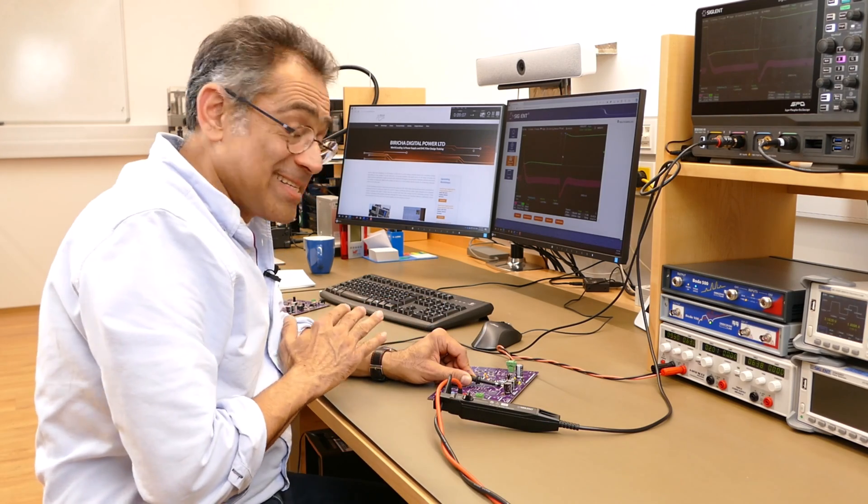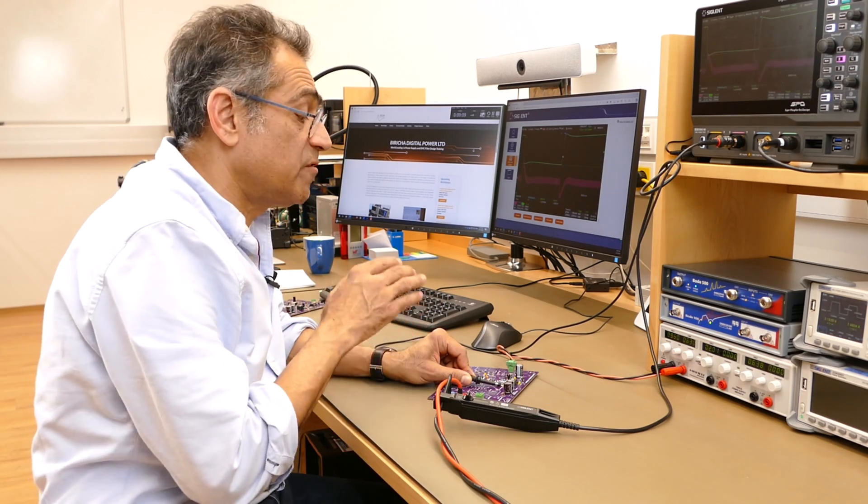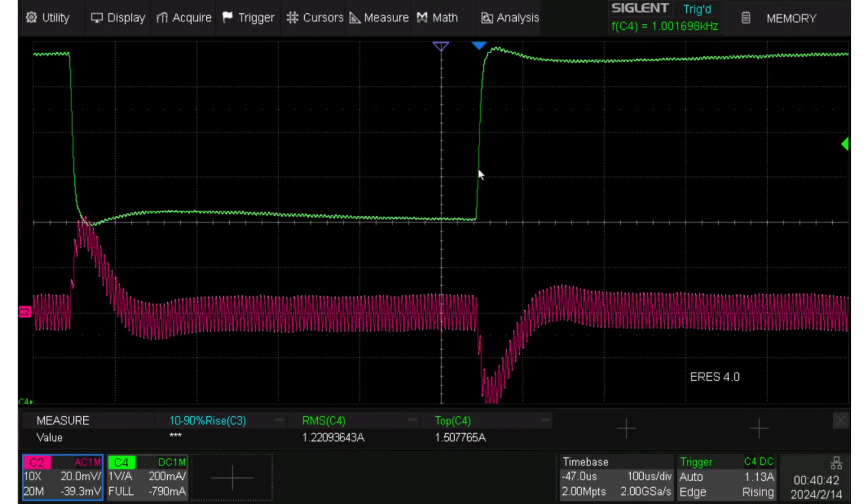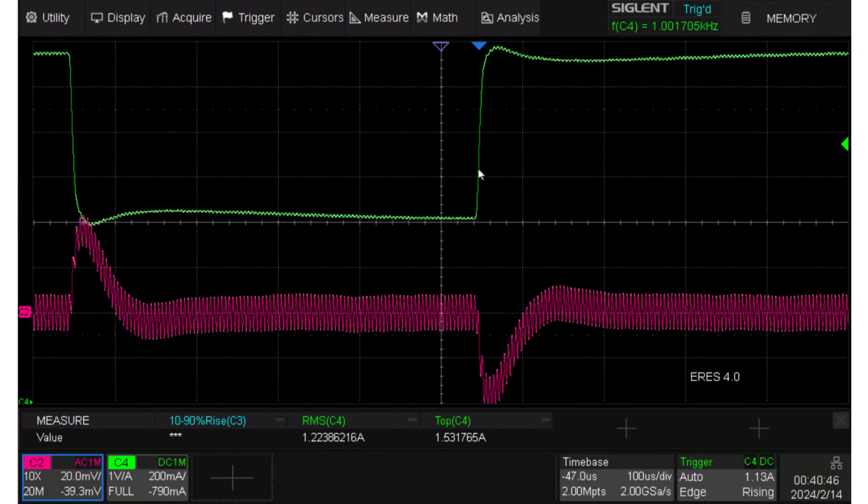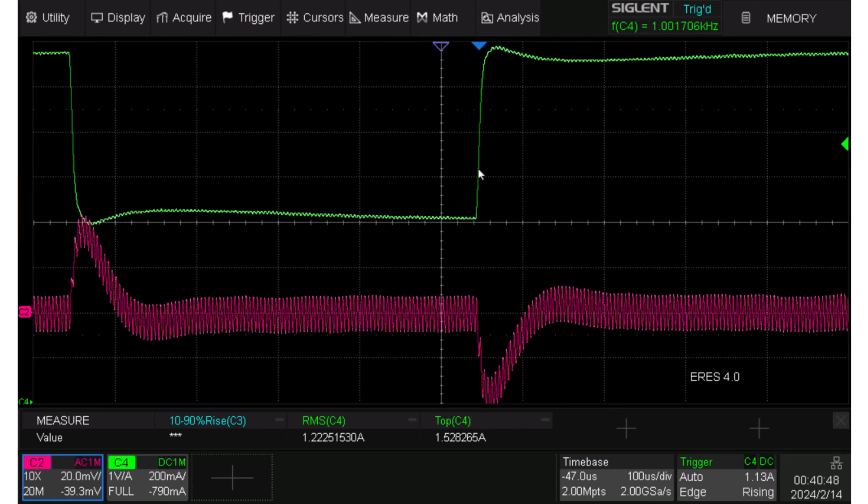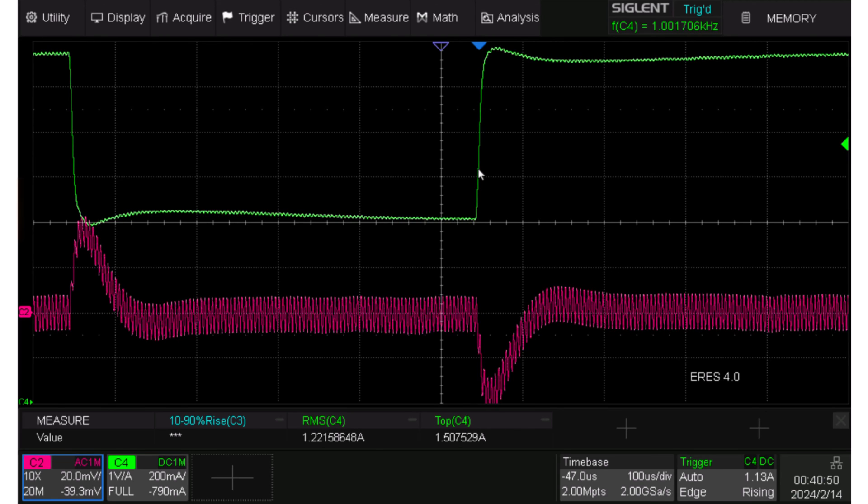Okay, so now this is exactly the same setup but with the voltage mode power supply. Again, the green trace is the load step that I'm giving it and the red trace is the ripple, the transient on the output.